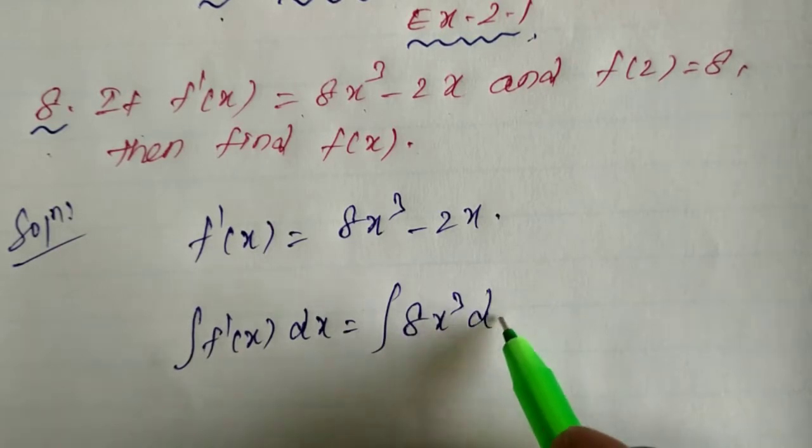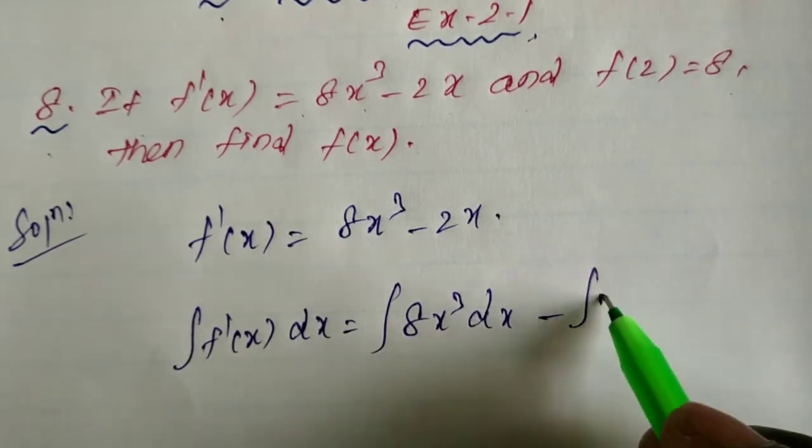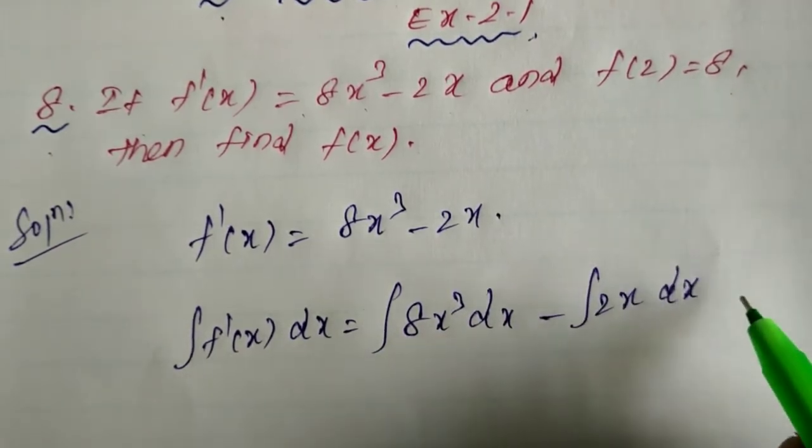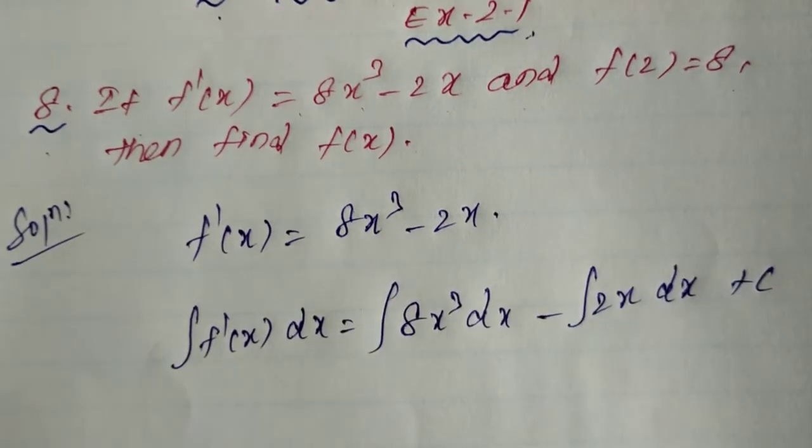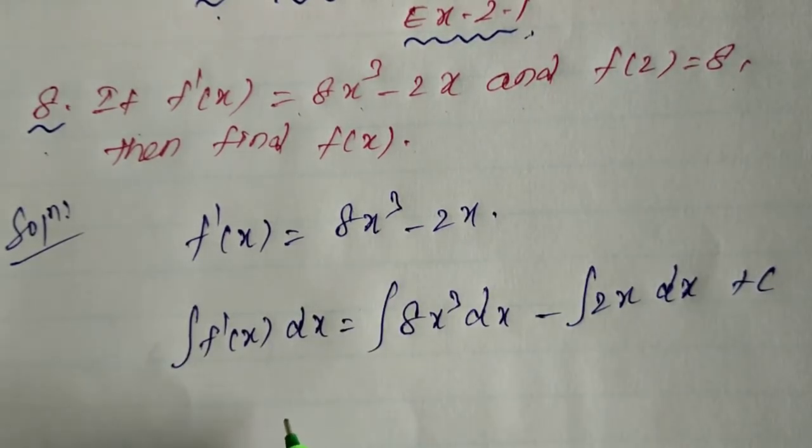So we have ∫f'(x)dx = ∫8x³dx - ∫2x dx + c. When we integrate f'(x), we get f(x).